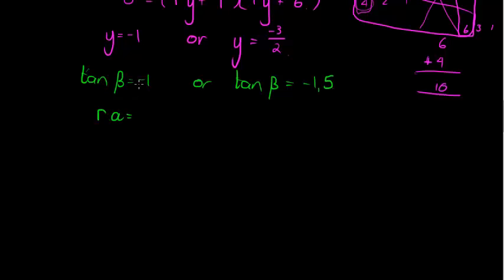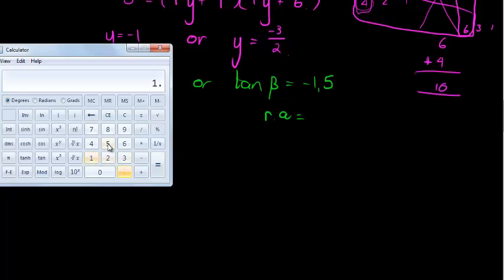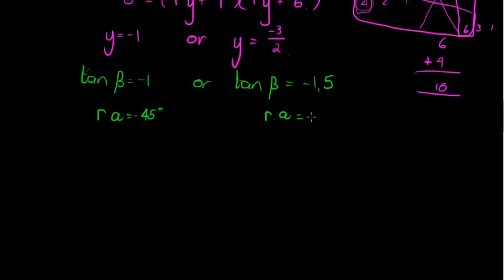A reference angle for tan to give me 1 would have been 45 degrees. So for negative 1 would be negative 45, because tan is negative in the fourth quadrant, and negative 45 is in the fourth quadrant. Reference angle here, I don't know what the reference angle for that is, I'm going to have to use my calculator. So I have negative 1.5, and the inverse tan gives me negative 56.31, negative 56.31.